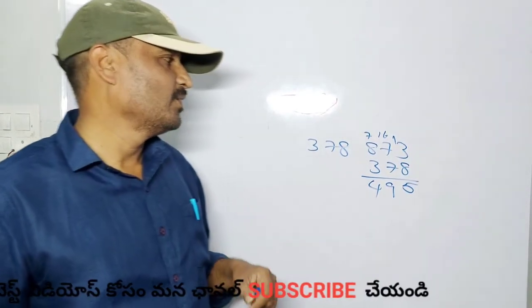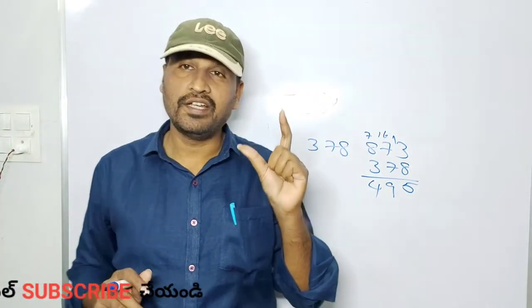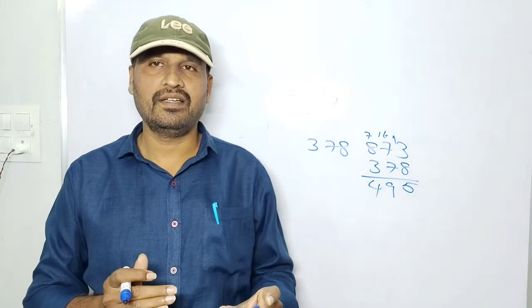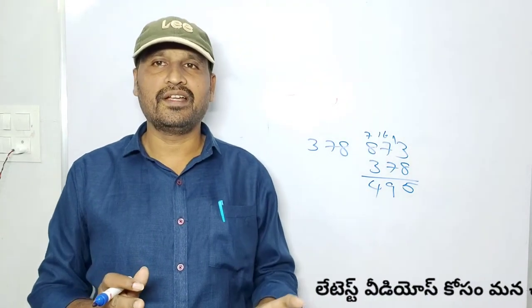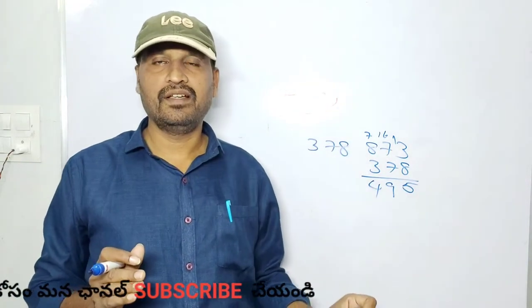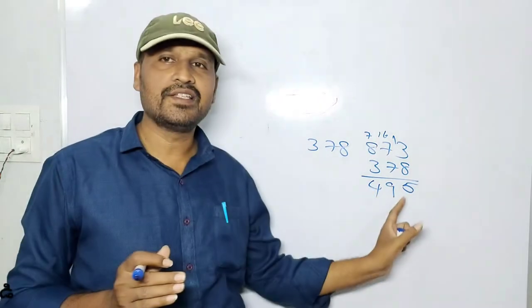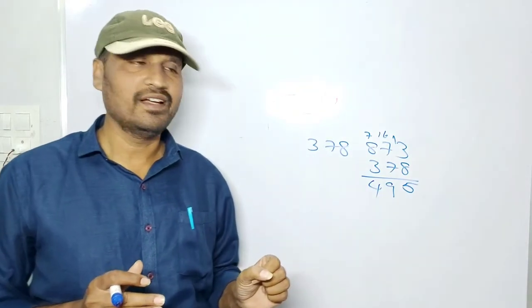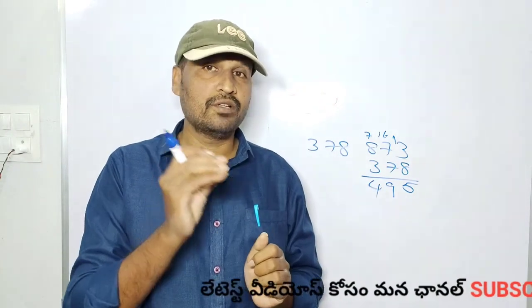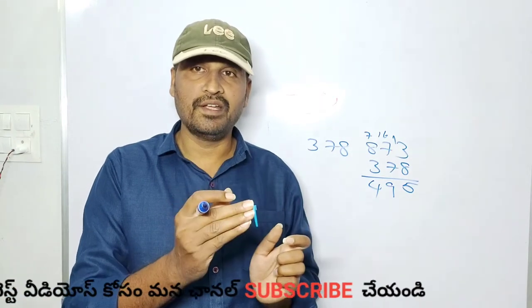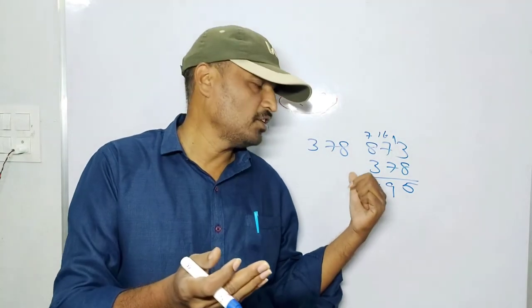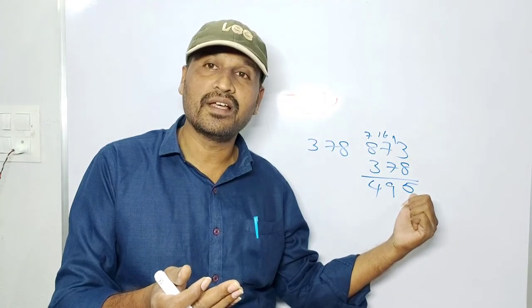So, if you take any 3-digit number, reverse it, and subtract the smaller from the larger, the middle digit of the result will always be 9, and the first and last digits will always add up to 9. This is the logic.